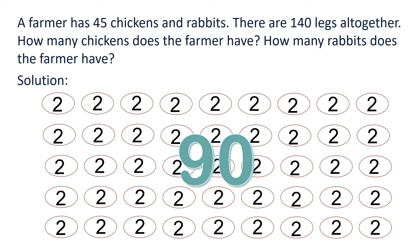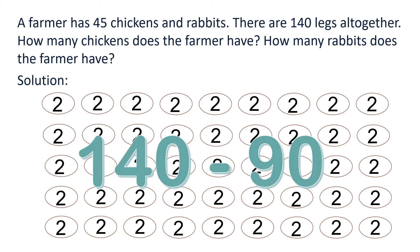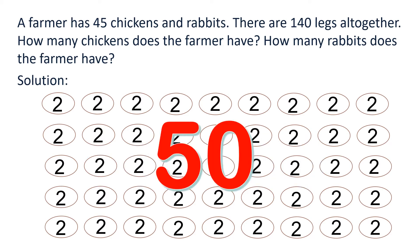That means we already have distributed 90 legs — that is 45 times 2. We have 140 legs altogether, so there are 140 minus 90 legs left, that is 50. Now let us bring our consideration to the rabbits. We know that rabbits have four legs. So we can distribute this 50 to the animals, giving them two more so that an animal will have four legs, and that will be a rabbit.